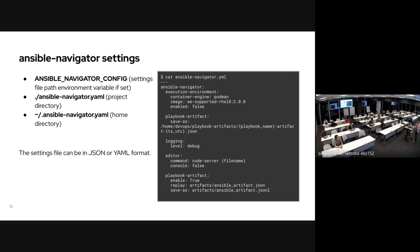Similar to the ansible.cfg file, we have multiple locations where we can keep ansible-navigator.yaml: your home directory, an environment variable, or your project directory. We recommend keeping it in the project directory, since each project might have different execution environments — for example, automating Windows or specific syscall stuff. The settings can be in JSON or YAML format.